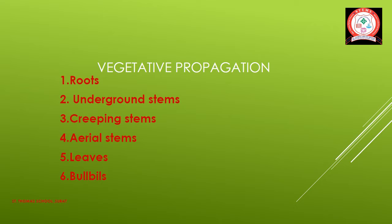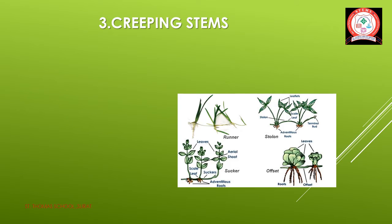In the previous class we discussed two types of vegetative propagation: roots and underground stems. Underground stems have five types: suckers, rhizomes, bulbs, and tubers. Today we will see the remaining types of natural vegetative propagation — creeping stems, aerial stems, leaves, and bulbils. First, we will see what are creeping stems.